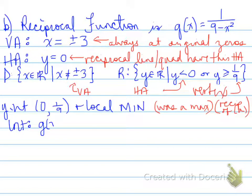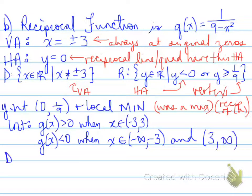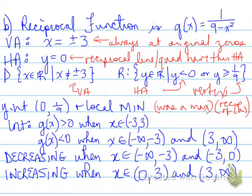Now we need to look at the intervals where the function is positive and negative. The intervals that are positive imply the same values that we had in the previous function, and when it's negative it's in the same intervals. Whether it's greater than or less than 0, it was the exact same intervals as the last one. Let's go back to the previous screen so I can explain these last bits.